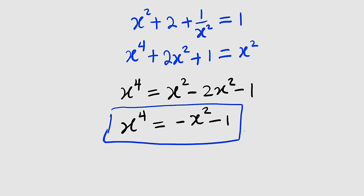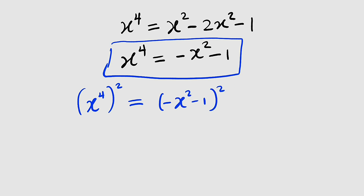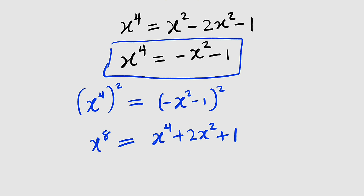From this equation, we can obtain x to the power of 8 by squaring both sides. So x to the power of 4 squared equals negative x squared minus 1, also squared. On the left-hand side we get x to the power of 8. On the right-hand side, expanding gives us x to the power of 4 plus 2x squared plus 1. But remember that x to the power of 4 is nothing but negative x squared minus 1, so we replace x to the power of 4 with negative x squared minus 1.